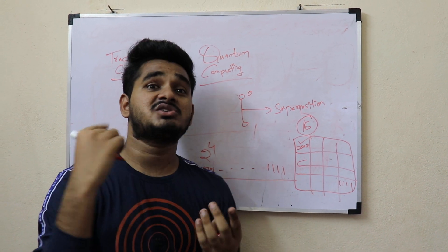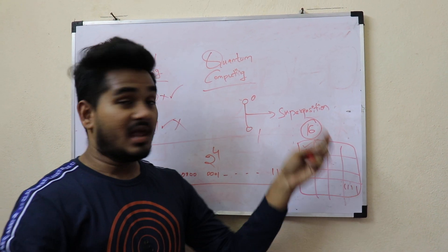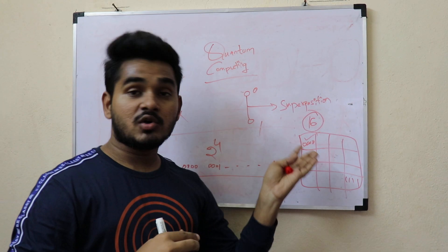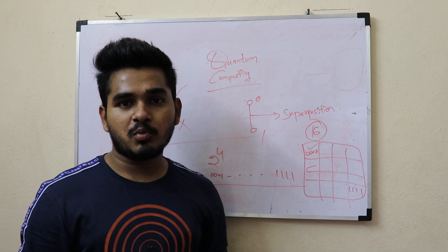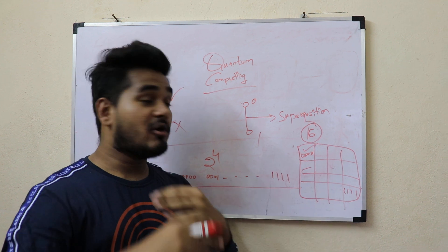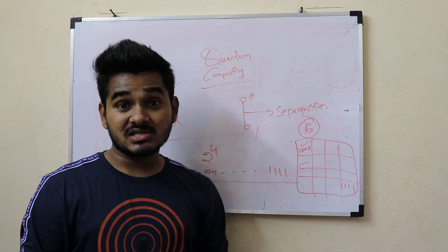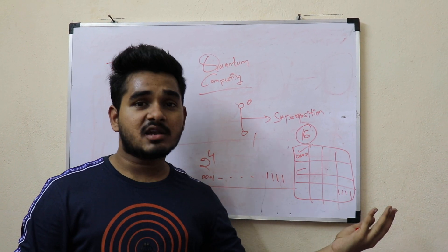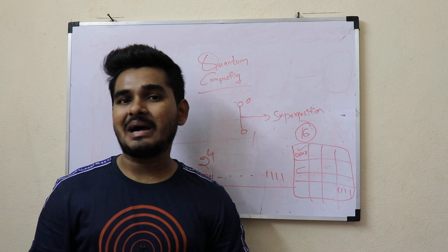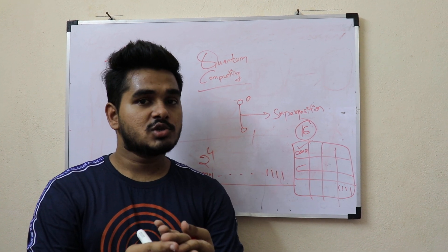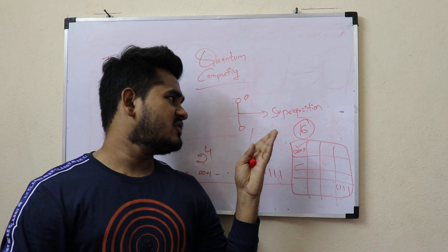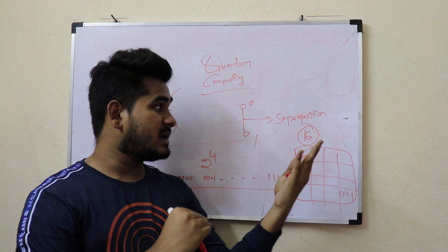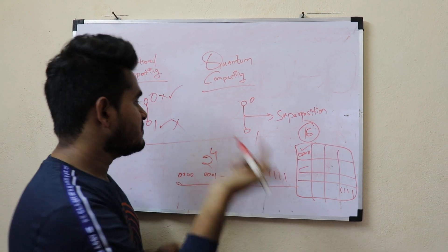Similarly, if you take a password set up in 16 different ways, it takes 16 attempts for a password hacker to break it. So for 2 to the power of 4 that is fine, but let me explain how quantum computing deals with this.